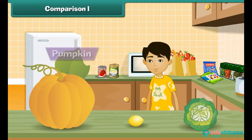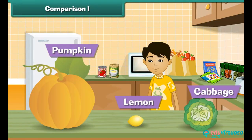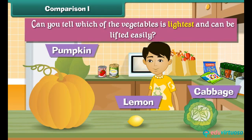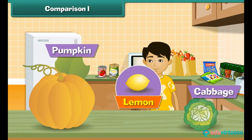Sandy has a pumpkin, a cabbage, and a lemon. Can you tell which of the vegetables is lightest and can be lifted easily? Yes, lemon is lighter than the other two vegetables. He can easily lift a lemon.